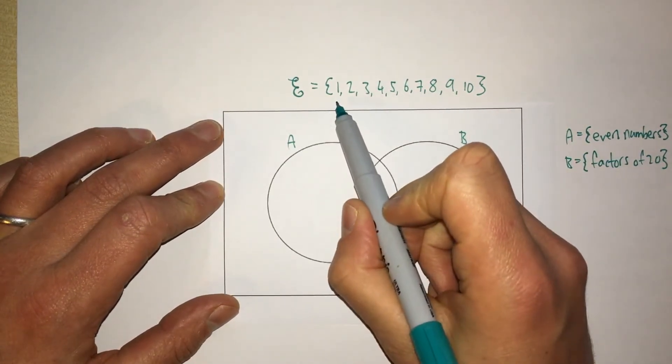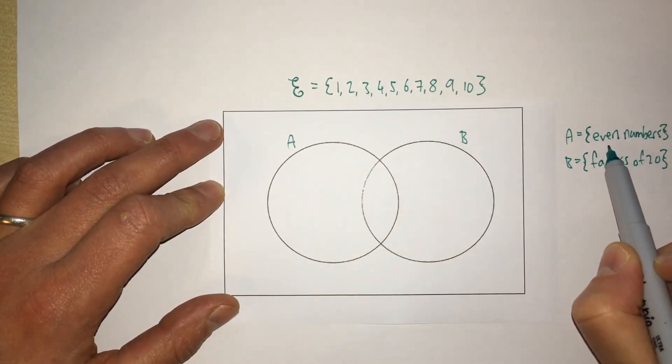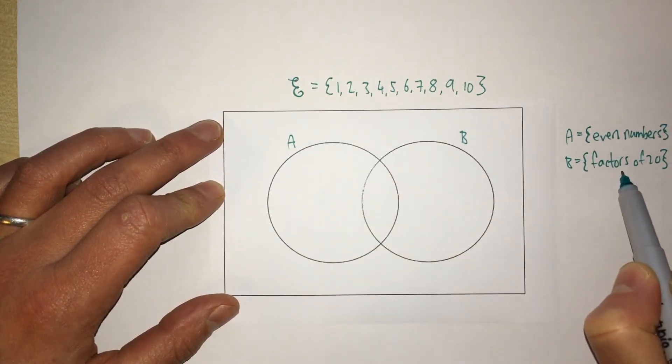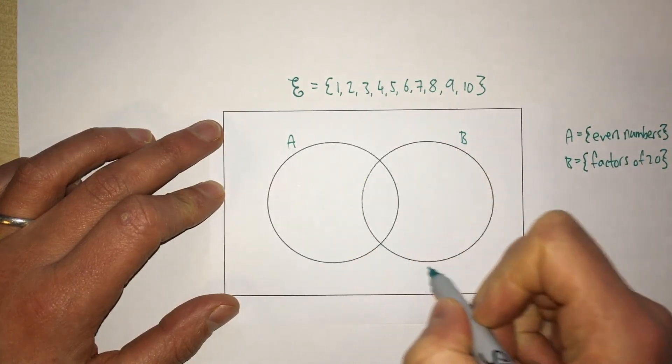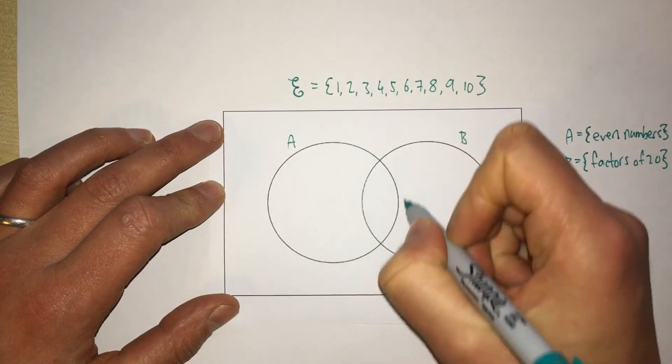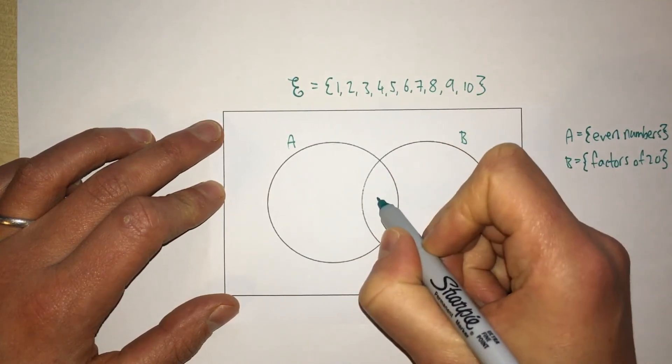Let's consider 1. Is 1 even? No. So it doesn't go in this set. Is it a factor of 20? Yes it is. So it goes in the circle for B, but not in this bit here which represents A and B.